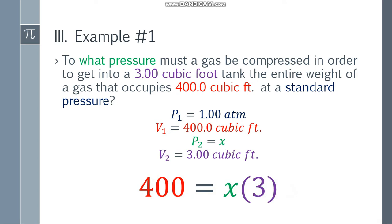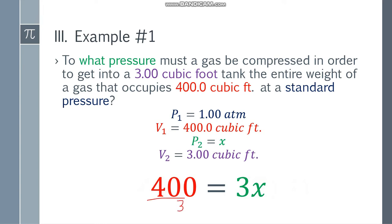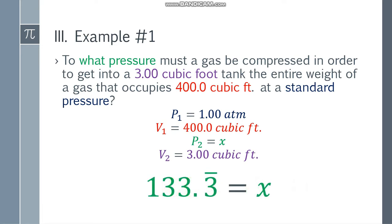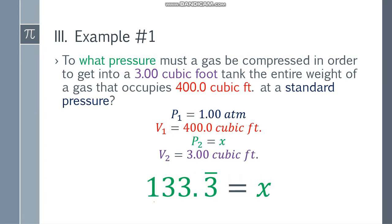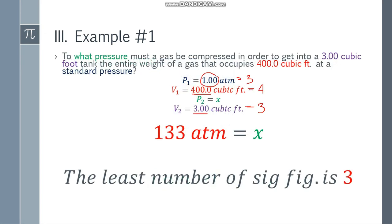And the right side x times 3 gives us 3x. Dividing both sides by 3 gives us 133.3 repeating decimal. For the final answer, we base it on the least number of significant figures. Checking: 1.00 has 3 significant figures, 400.0 has 4, and 3.00 has 3. So the least is 3. Since the next digit after 133 is 3, we round down. The final answer is 133 atm.